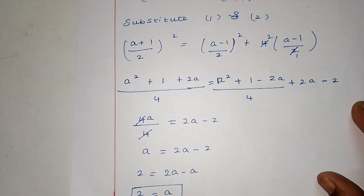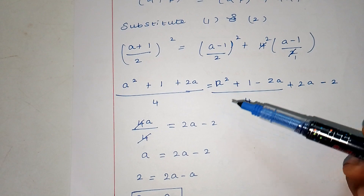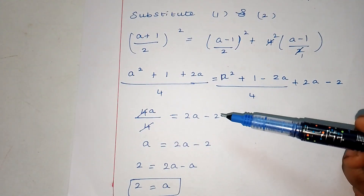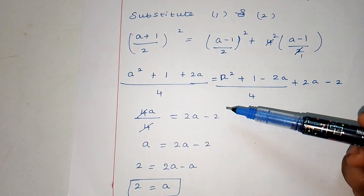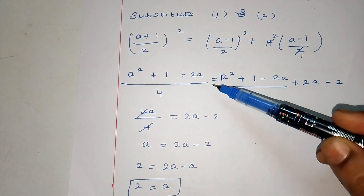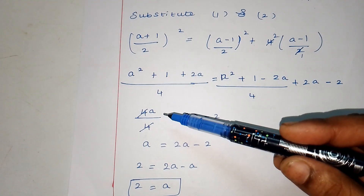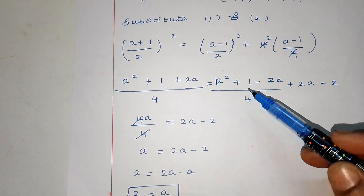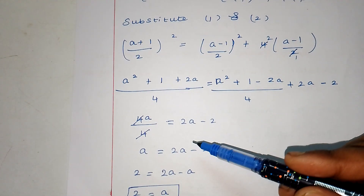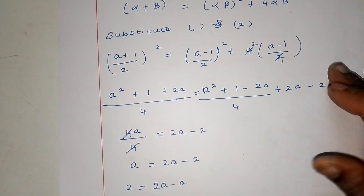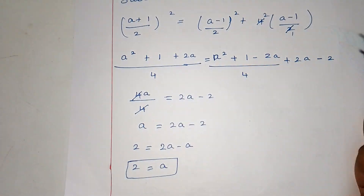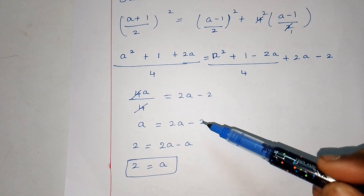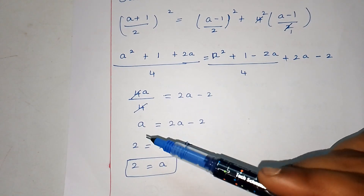Now we solve this. A² and 1 cancel from both sides. On the left: a² plus 2a plus 1 over 4. On the right: a² minus 2a plus 1 over 4 plus 2a minus 2. After cancelling a² and 1, we get 2a plus 2 equals minus 2a plus 4a minus 2, simplifying to minus 2a equals 2a minus 2.